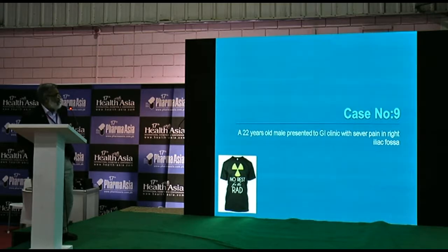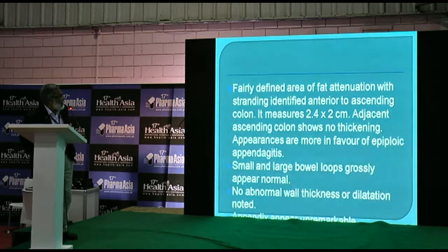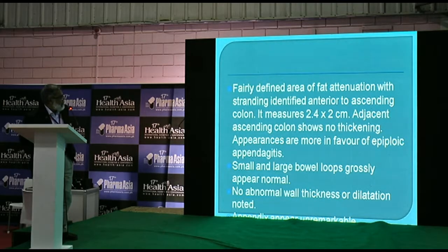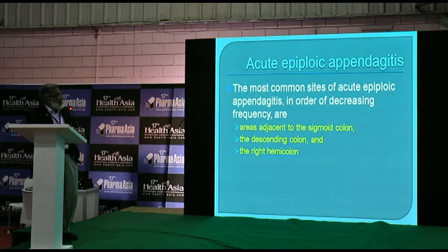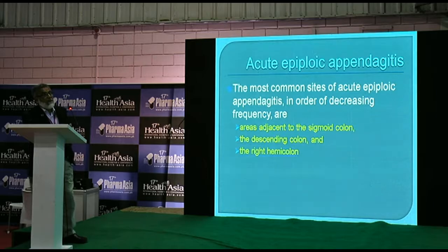Case 9: a 22-year-old male in the GI clinic with severe pain in the right iliac fossa. CT showed well-circumscribed pericolic fat stranding and attenuation with adjacent wall thickening, consistent with epiploic appendicitis. These lesions can occur adjacent to the sigmoid colon, descending colon, and right hemicolon, and must be evaluated with great caution.